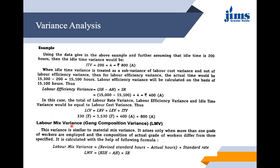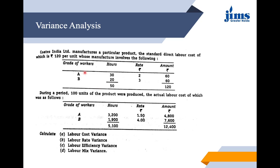Labor mix variance, also called gang composition variance, arises where one task is done by many people together. This variance is similar to material mix variance and arises only when more than one grade of workers is employed and the composition of actual grade workers differs from those specified in the standard. The formula is: (Revised Standard Hours minus Actual Hours) into Standard Rate. Let us see a numerical example.